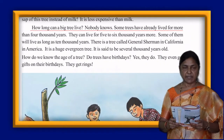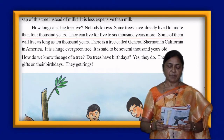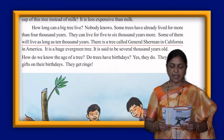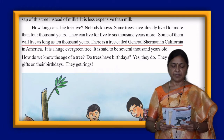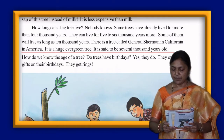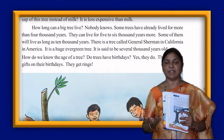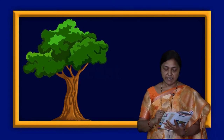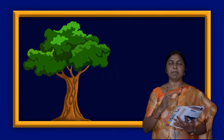How long can a big tree live? Nobody knows. Some trees have already lived for more than 4,000 years. They can live for 5,000 to 6,000 years more. Some of them will live as long as 10,000 years. There is a tree called General Sherman in California, America. It is a huge evergreen tree, said to be several thousand years old. Trees live more than 4,000 years — some 5,000 or 6,000. We can see many big forests with trees that live years together.